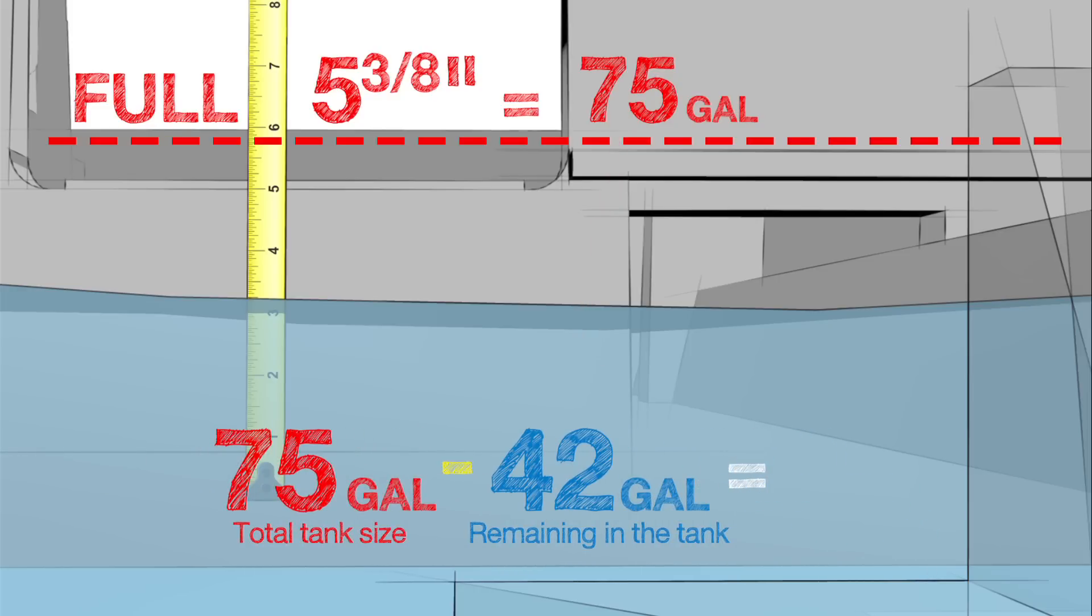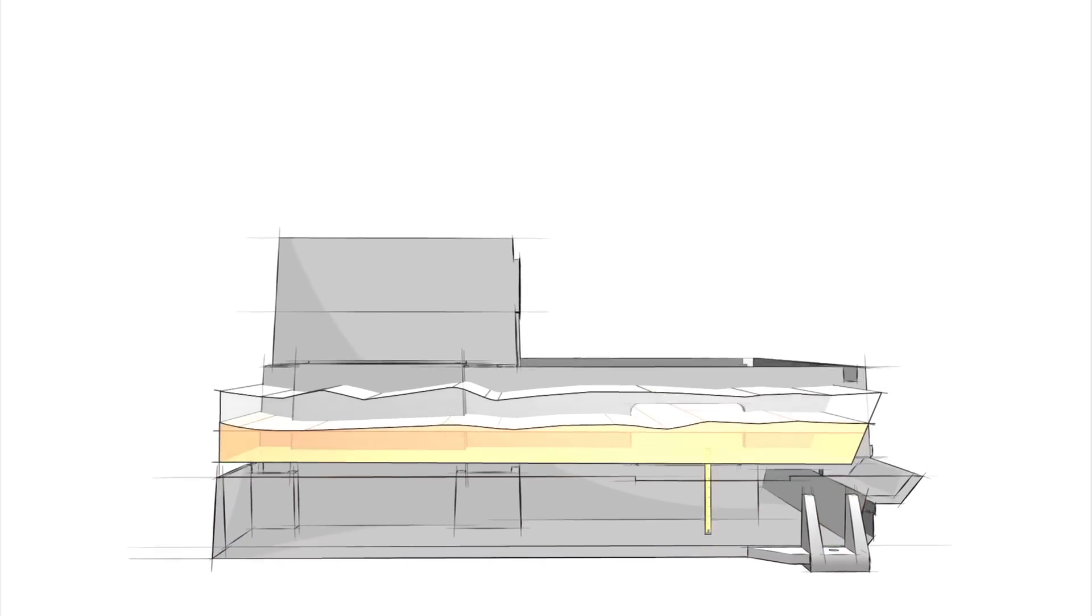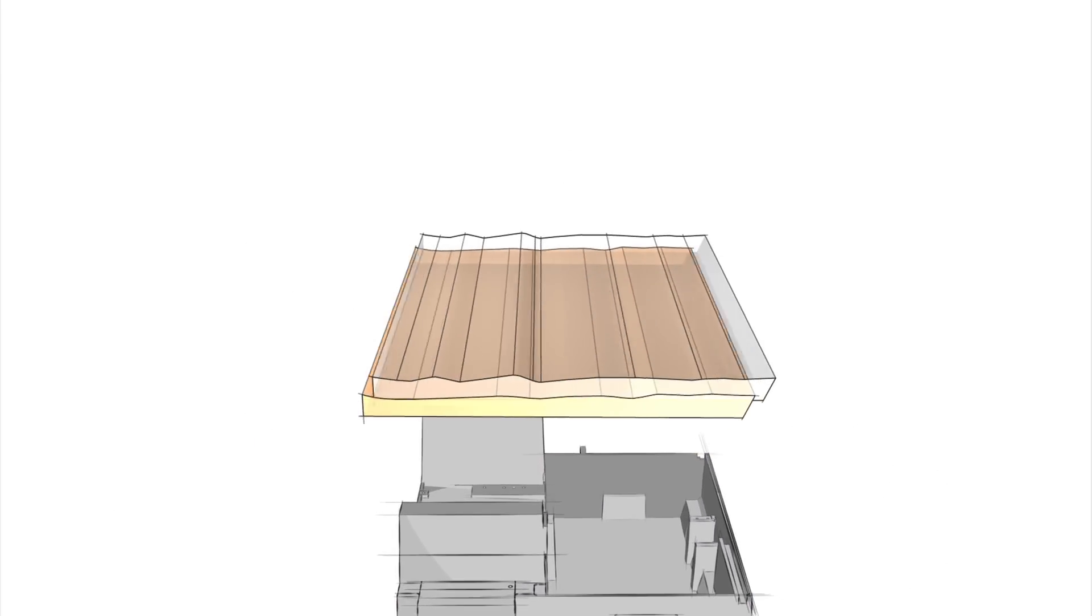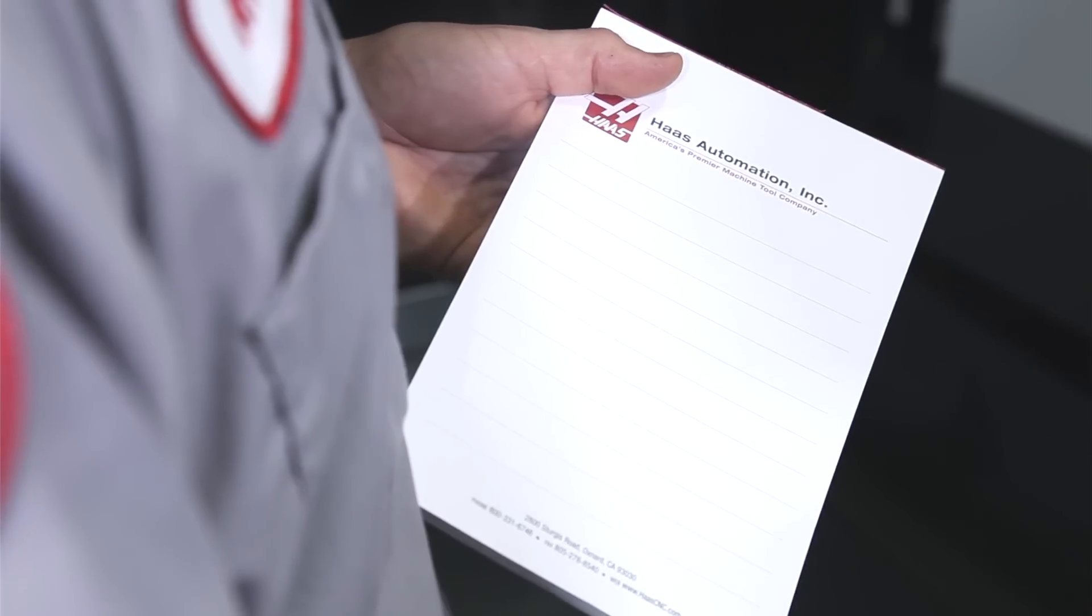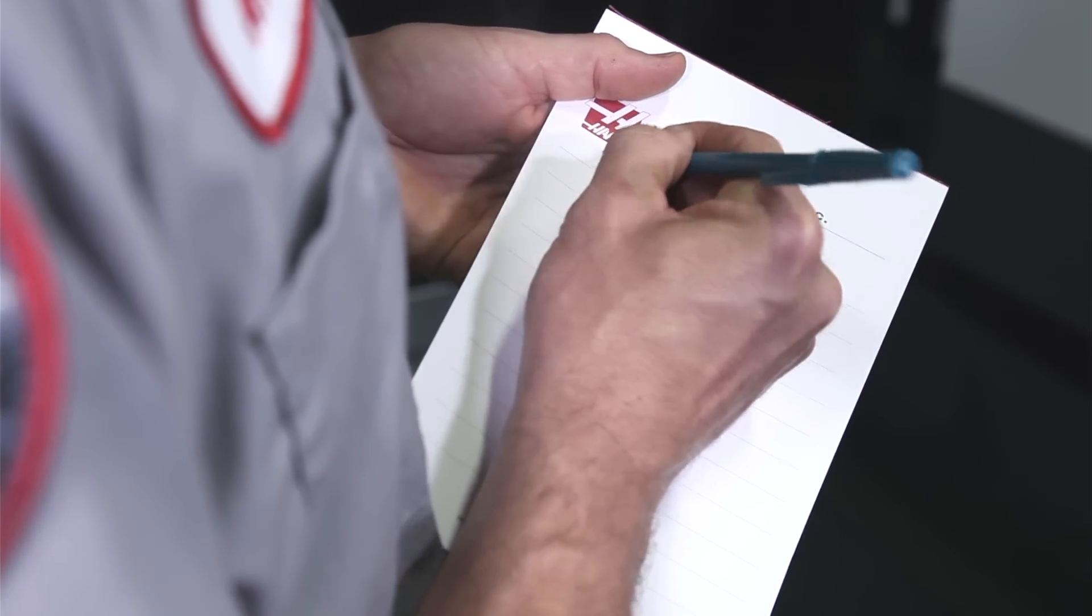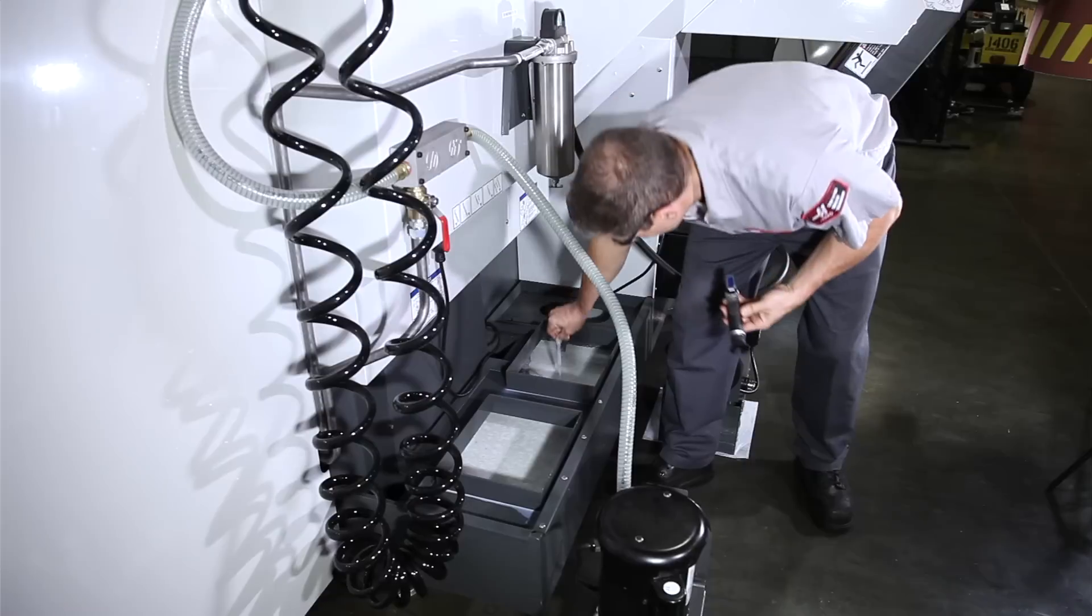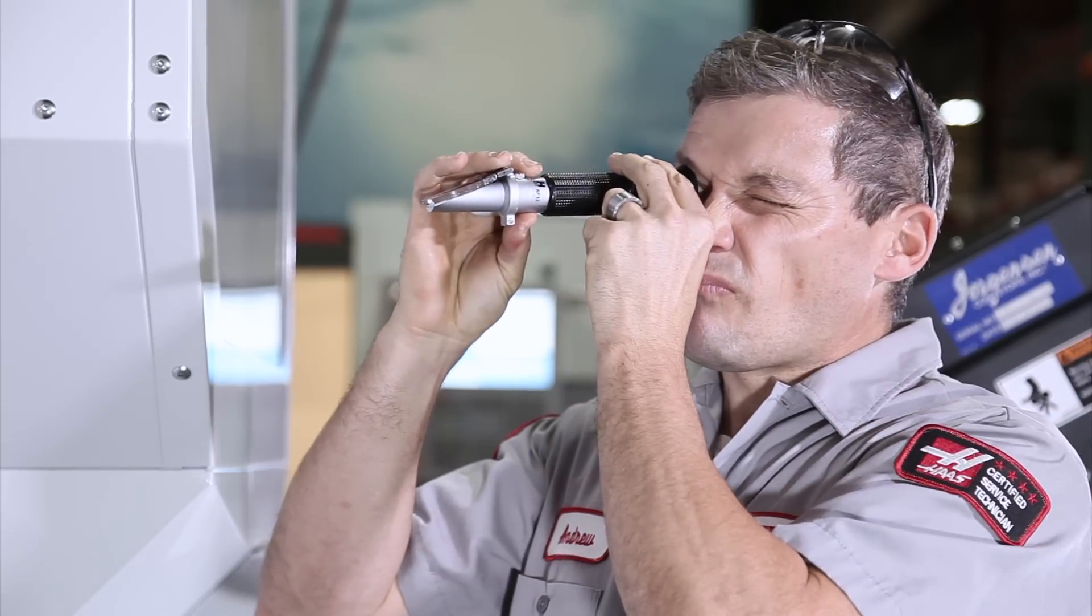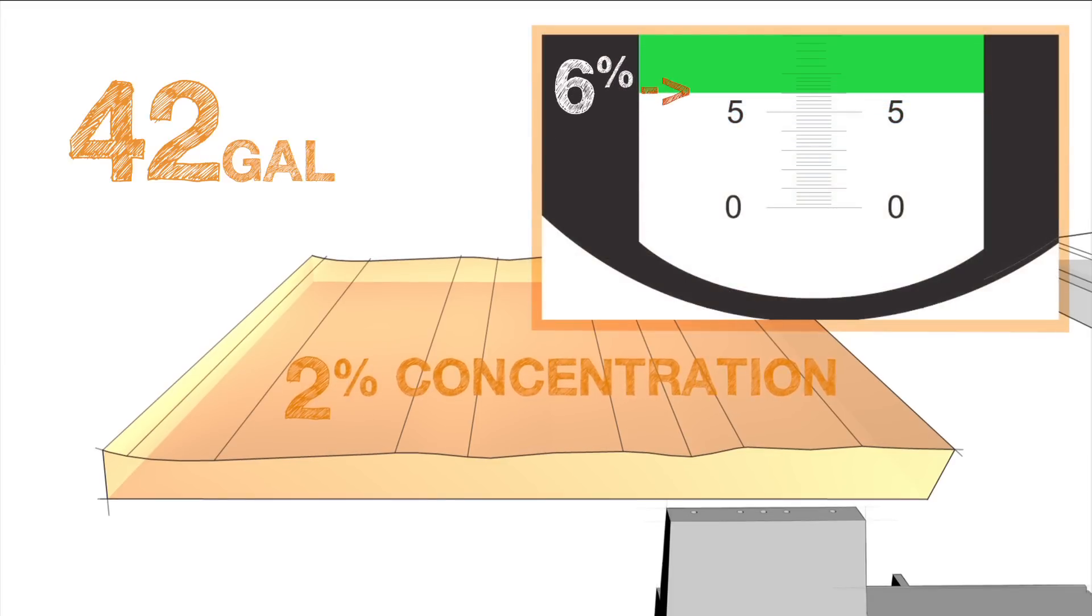At this point we have figured out the value for two separate quantities: the remaining coolant in the tank equals 42 gallons, and our top-up amount equals 33 gallons. Write your numbers down as you go. Next, measure the concentration of the existing coolant. Our reading is two percent. This time our goal is to hit a concentration in the six percent range.